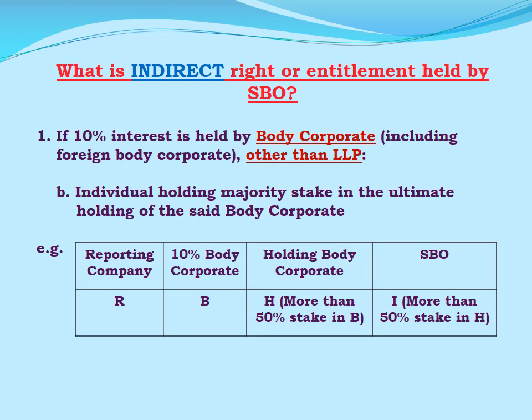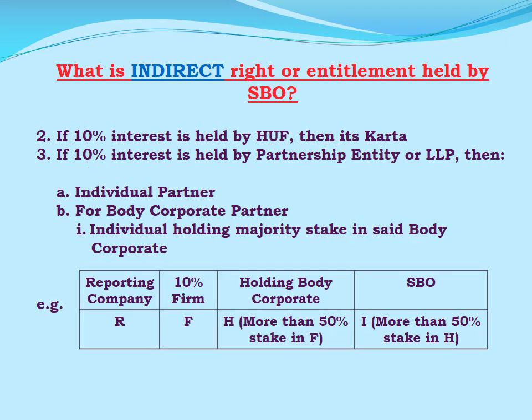The second situation: holding majority stake in the ultimate holding of the said body corporate shall be called as significant beneficial owner. If R is a reporting company having B, a body corporate with 10% interest in R, and H is a holding company of B having more than 50% stake in B, then I, an individual holding more than 50% stake in H, shall be the significant beneficial owner. If there are more than one layer of holding body corporate, then the significant beneficial owner shall be an individual holding more than 50% stake in the last layer of holding.